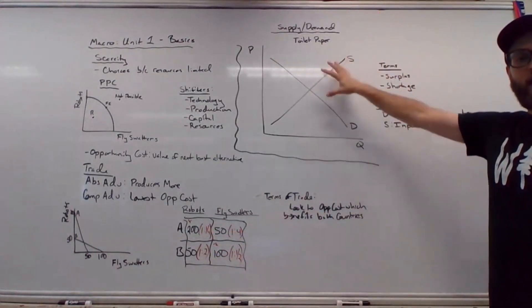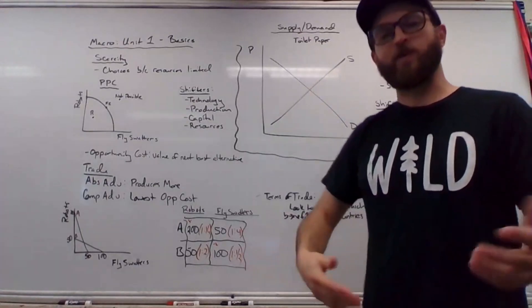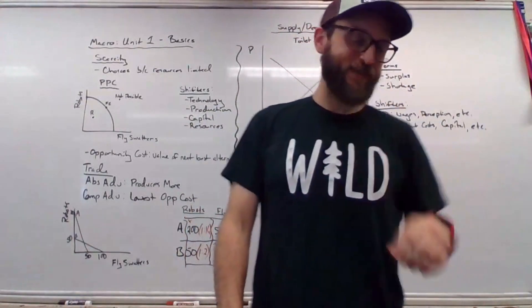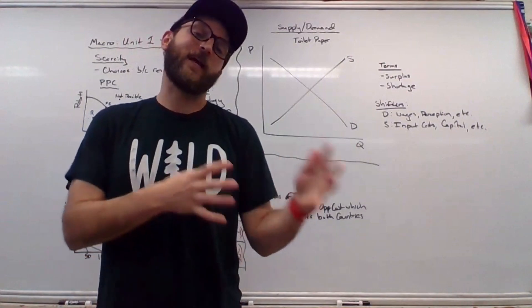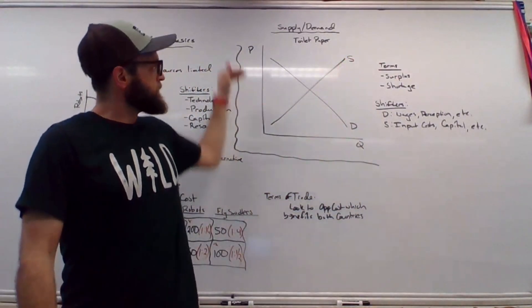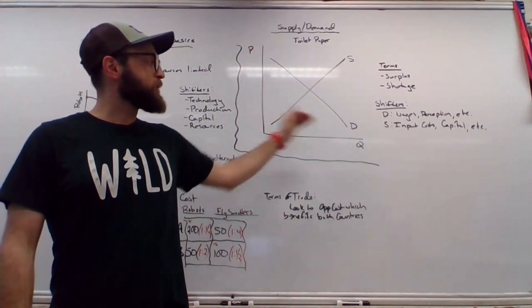Also in Unit 1 is the basic supply and demand graph. So here we're looking at toilet paper because that's how we're rolling. Wow, that was a bad joke. On March 16th, 2020, the supply line is upward sloping because producers and sellers always want to supply objects at high prices, so the quantity supplied is very high at a high price. The quantity demanded is downward sloping because everybody wants cheap objects.